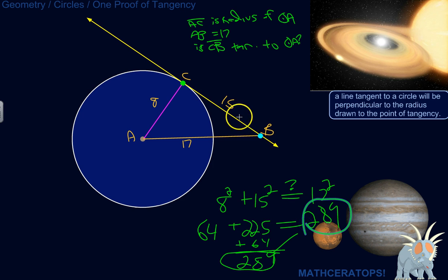So by the converse of the Pythagorean theorem, this, in fact, is a right triangle. And therefore, because tangent lines are perpendicular to radii drawn to the point of tangency, we know that, in fact, BC is tangent to circle A. So we are good to go.